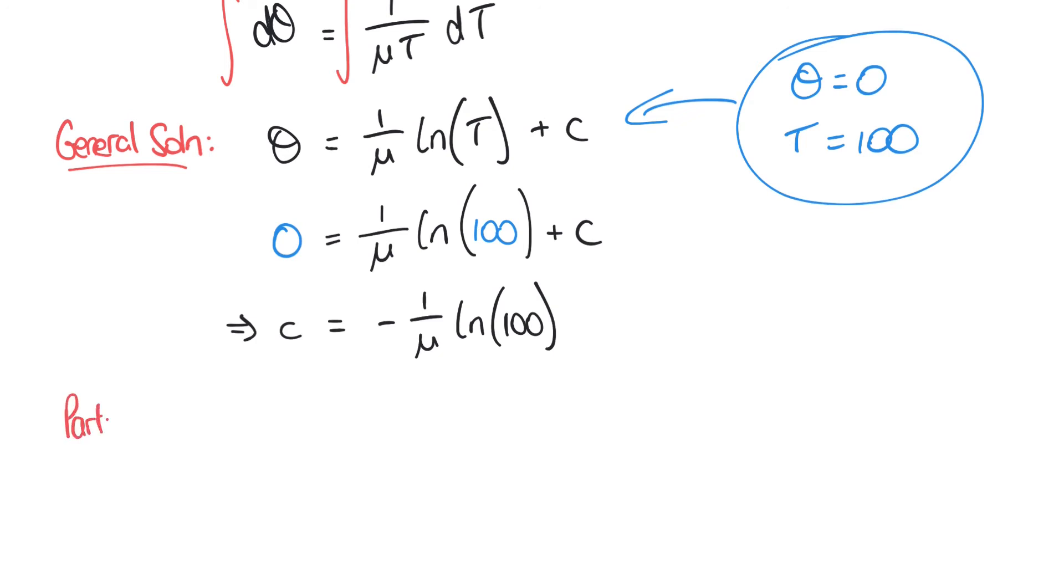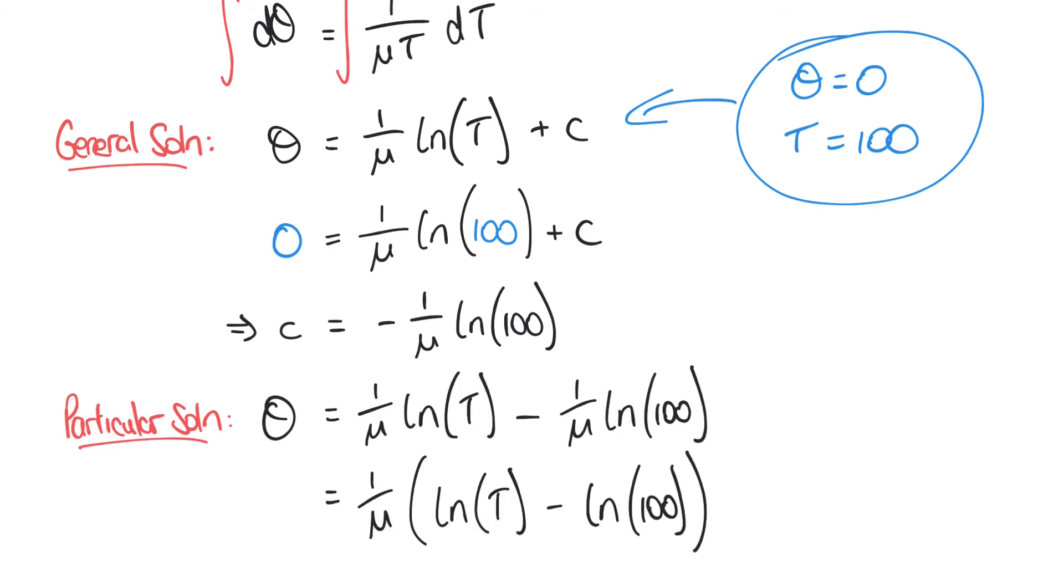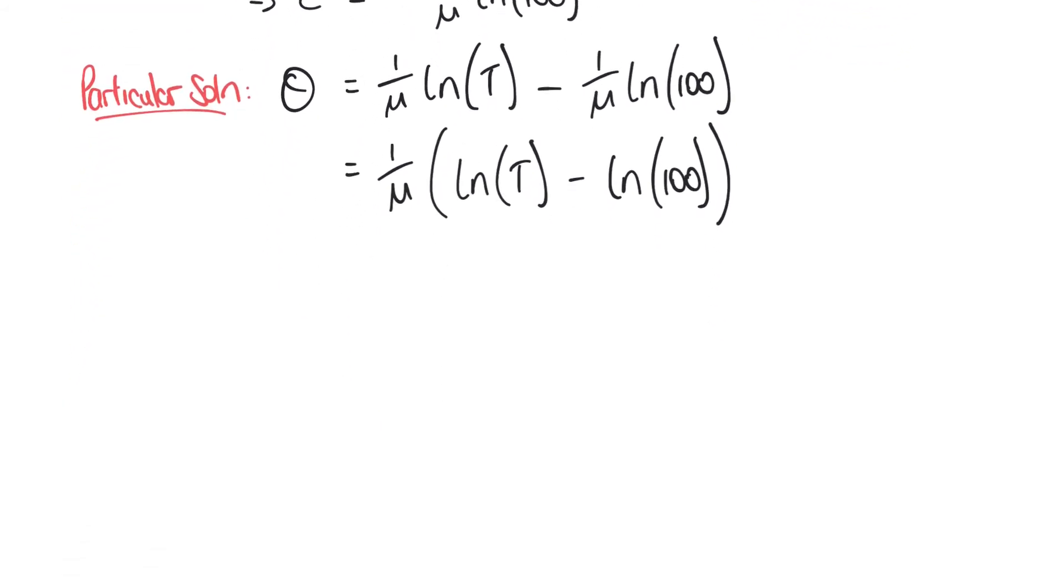So now we have our particular solution because we can revisit our general solution, which was theta equals 1 over μ times the natural logarithm of T. But now we know the value of c. So rather than plus c, we can say that it's minus 1 over μ times the natural logarithm of 100. We can simplify this a little bit by taking out a common factor of 1 over μ. And so we have 1 over μ times ln(T) minus ln(100), where they're both natural logarithms still. And again, remembering one of the laws of logarithms, what we have here, ln(T) minus ln(100) is the same as ln(T/100). And so we can say something like θ = (1/μ)ln(T/100) as a tidier solution for theta.